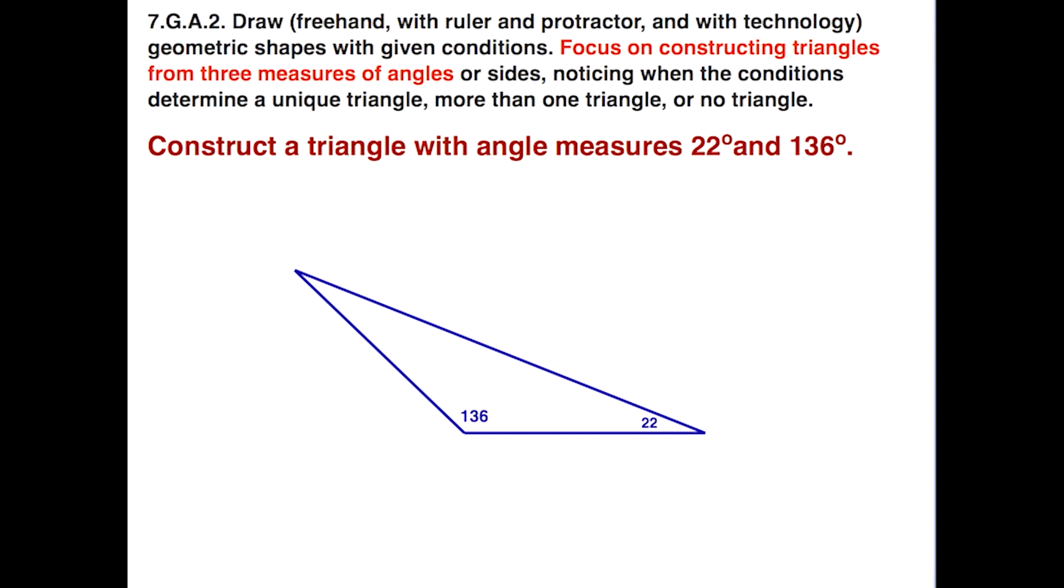Now the question is, well, that third angle in this triangle, what is the measure for that one? If we take our protractor and measure it, look what happens. It's 22 degrees. Let's check our figures. If we combine 22 and 22 and 136, that is 180.